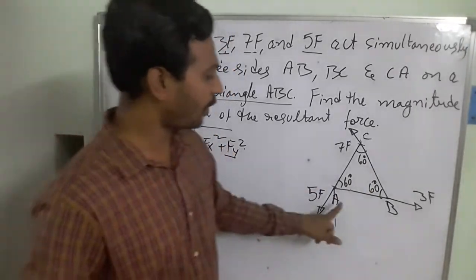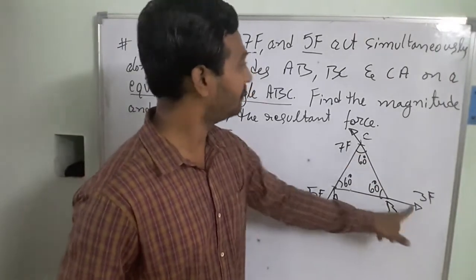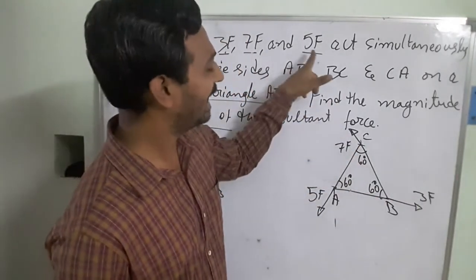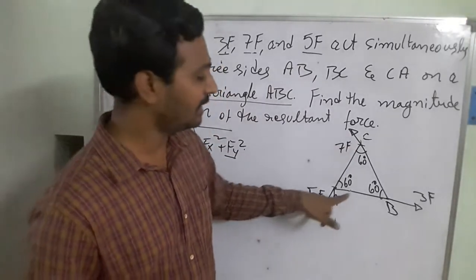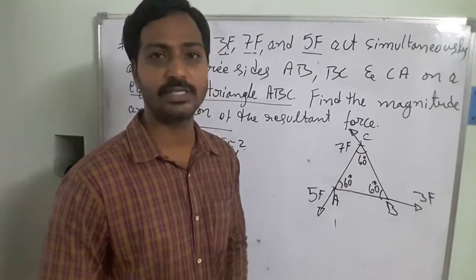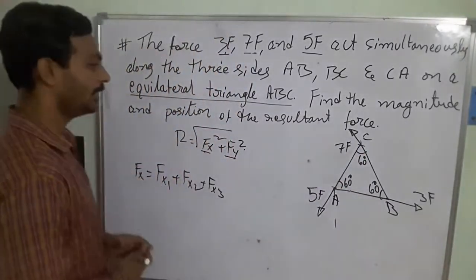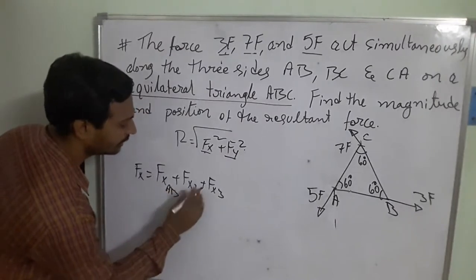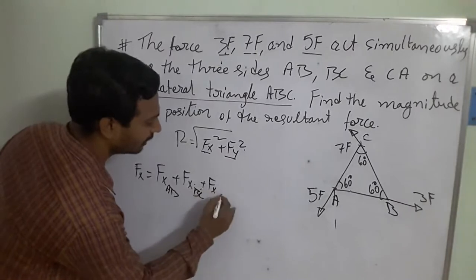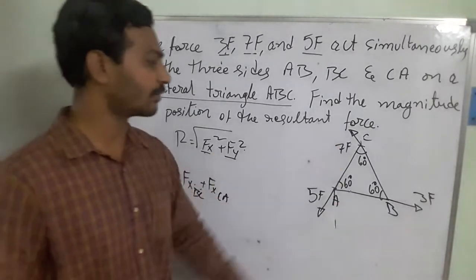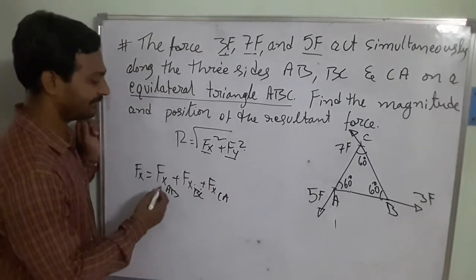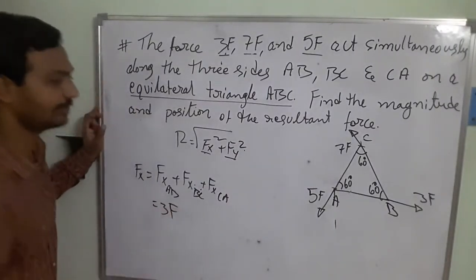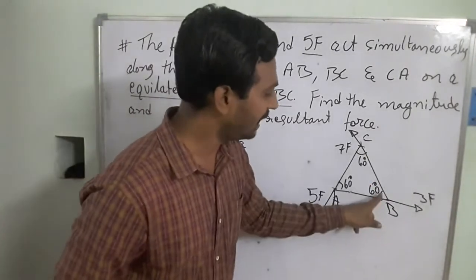At points A, B, C: the force 3f acts along AB, 7f acts along BC, and 5f acts along CA. The inclination angles are 60 degrees each, because it is an equilateral triangle. We need to find the horizontal component. AB acts in the horizontal direction, BC makes an angle of 60 degrees, and CA also makes an angle of 60 degrees.